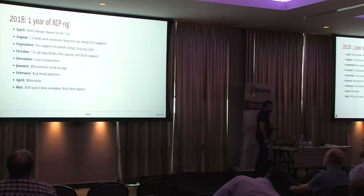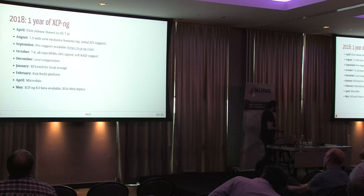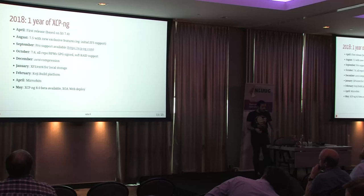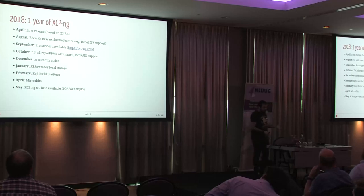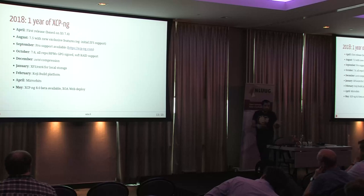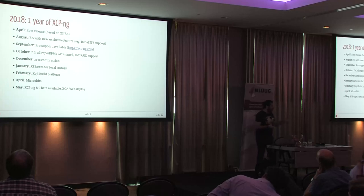We made our first release quickly — the Kickstarter ended in February and we moved fast. A contributor from Mageia, an RPM-based distro, helped us create the first release. We then followed closely with Citrix's XenServer releases. We added features: signed RPMs, switched to YUM (simpler than XenServer's update system), added ZSTD compression support, set up a Koji build platform (used by Fedora), and implemented MirrorBits — a VLC project tool that syncs mirrors worldwide and redirects download requests to the closest location.